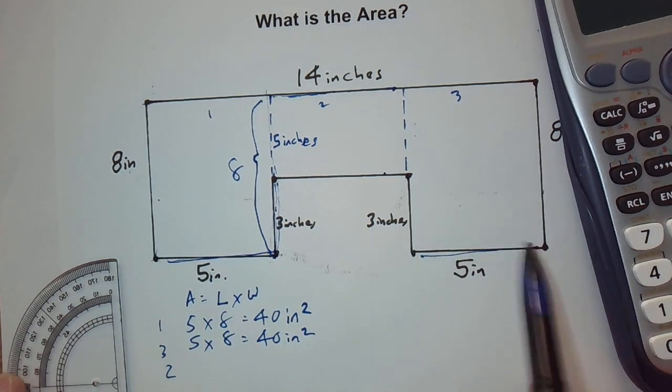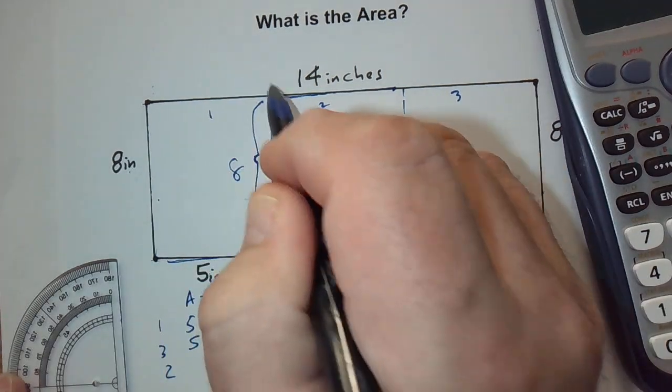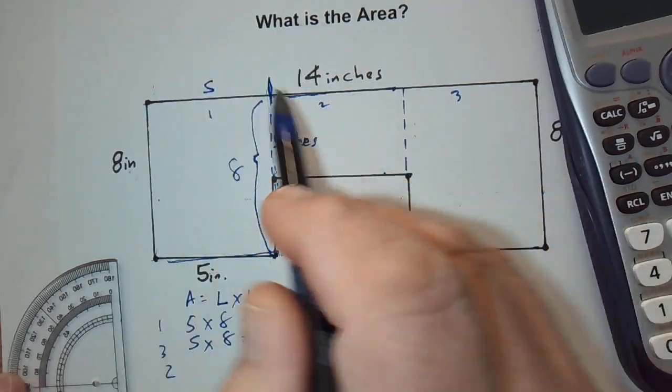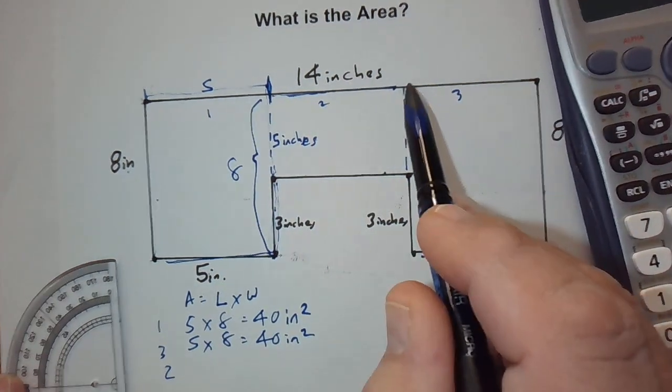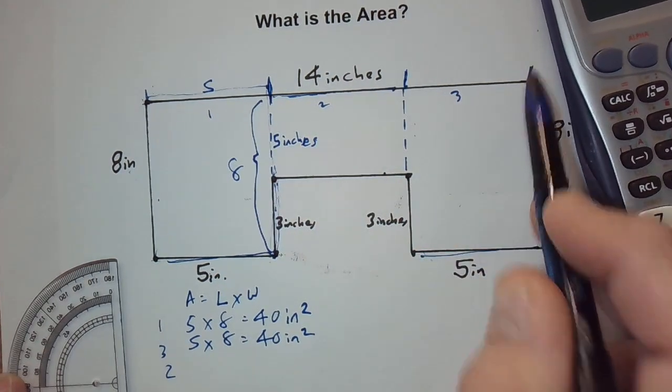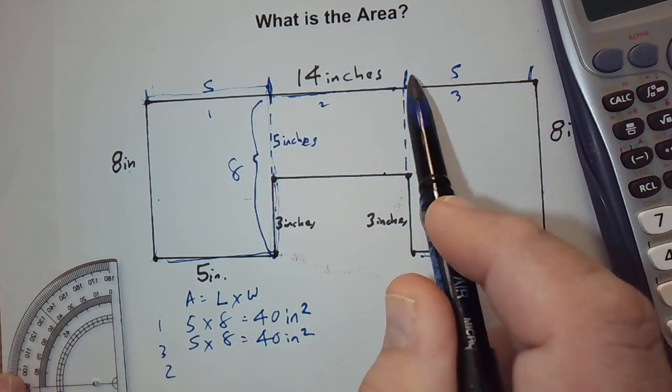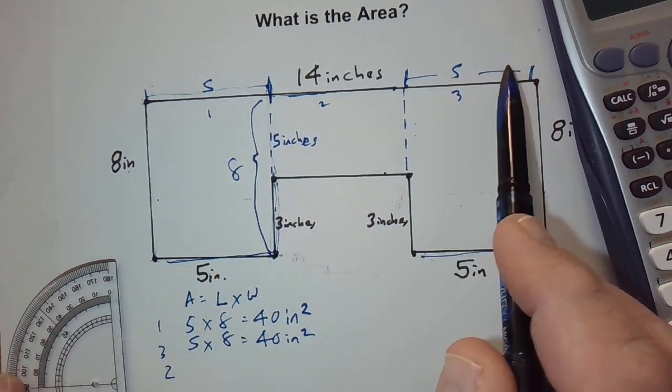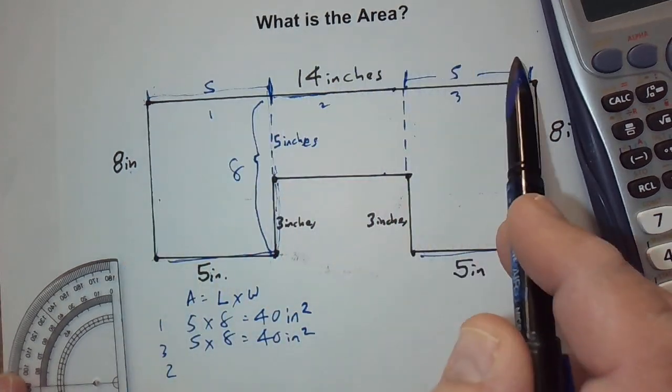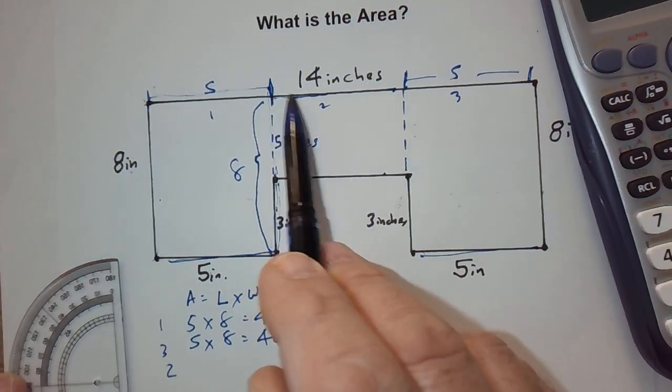So, this up here from here to here is five. And, since this is a rectangle, this side is going to be the same as the bottom, and this part here is five. So, if this is five, and this is five, and the whole thing is 14, how do we find this distance here?